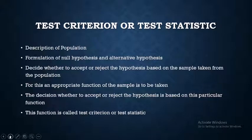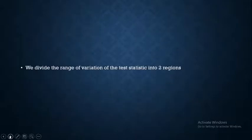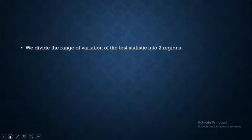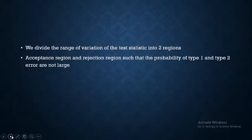This function is called a test criteria or test statistic. We divide the range of variation of this test statistic into two regions: one is the acceptance region and the other is the rejection region.